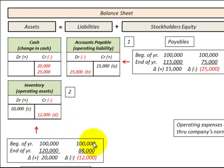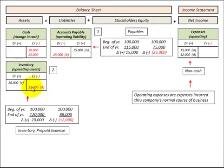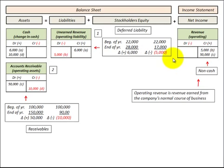When we actually use this inventory, we'd reduce inventory by — say — $12,000. The beginning-of-year balance was $100,000 and end-of-year was $88,000, a reduction of $12,000. We decrease the inventory account by $12,000 and recognize it as a non-cash expense on the income statement.